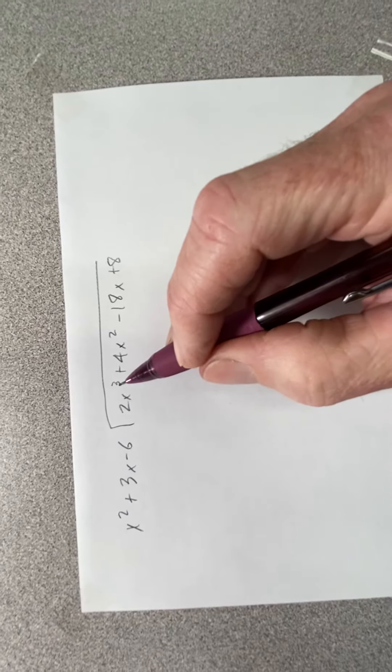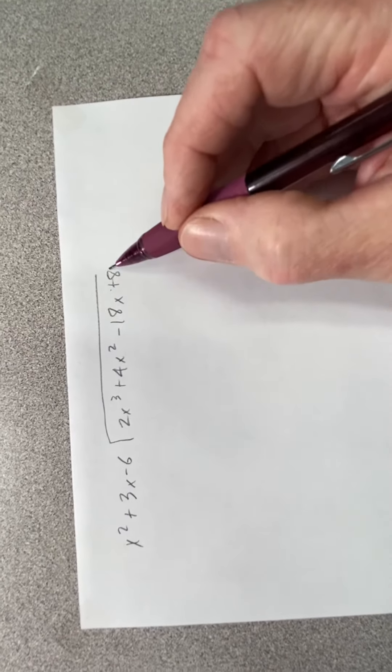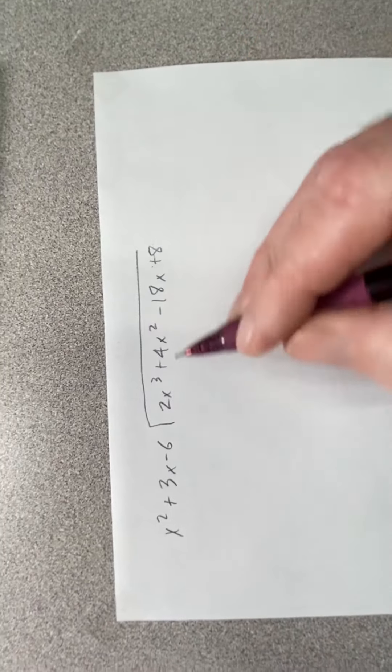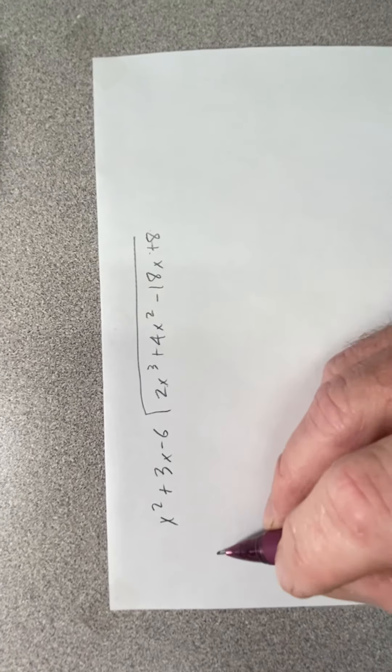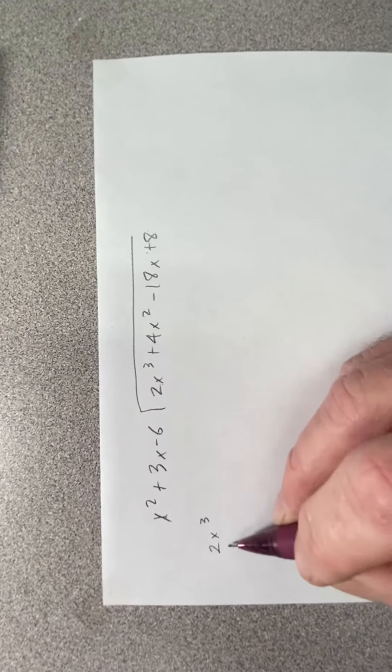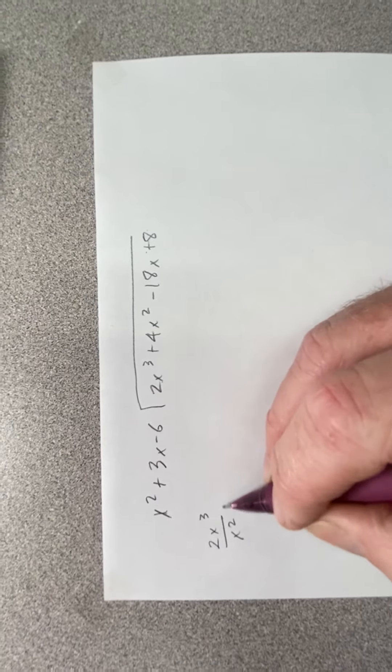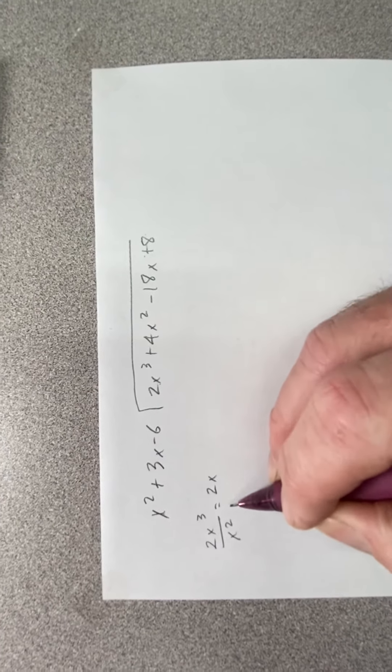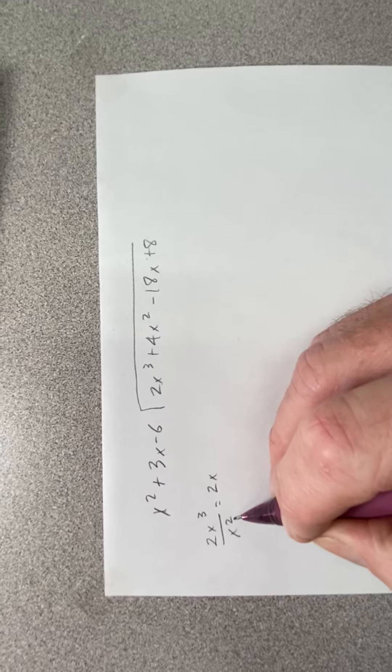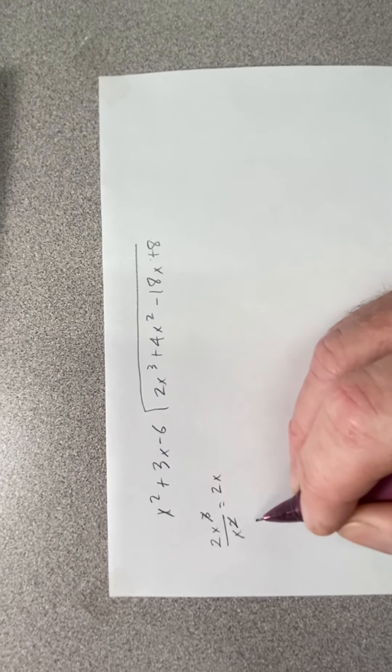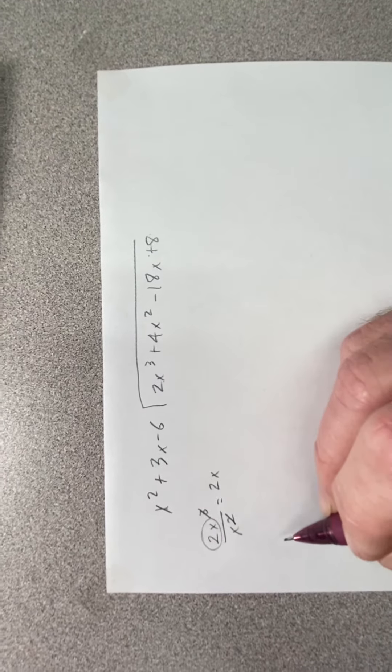Double checking, I've got exponents of 3, 2, 1, and a constant. I'm going to take my first term, 2x cubed, and divide by my first term of x squared. That leaves 2x - the 3x is on top, 2 on bottom, those cancel, leaving me with 2x.